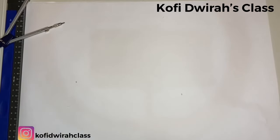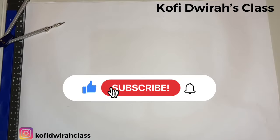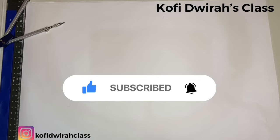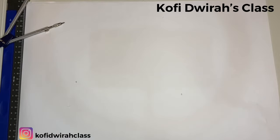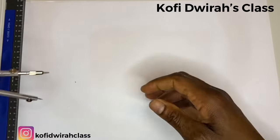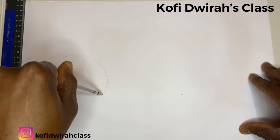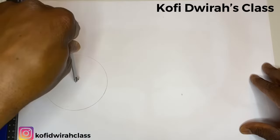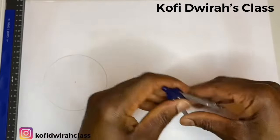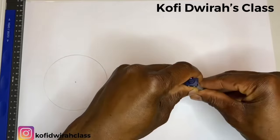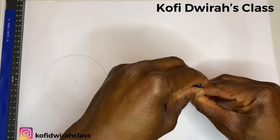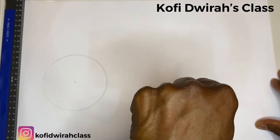Hello, welcome to my YouTube channel Coffee Dress Class. Today we are going to construct an internal tangent to two unequal circles. With our compass we can take any radius, we draw our first circle, then the smaller circle. It shouldn't be equal because this is on unequal circles, so we draw the next circle, the smaller one.